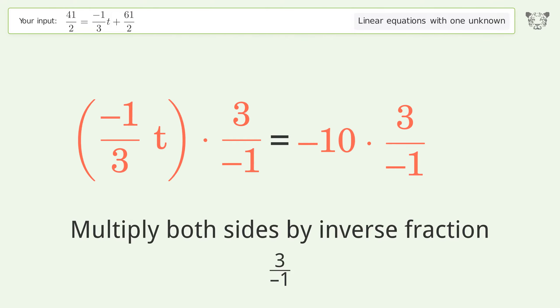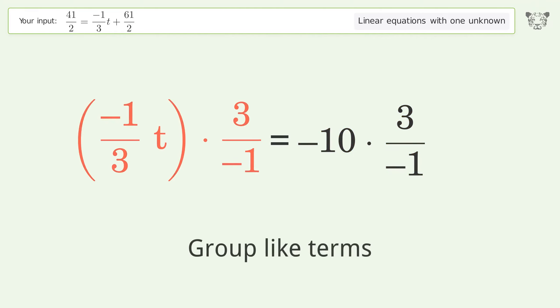Isolate the t. Multiply both sides by the inverse fraction, 3 over negative 1.